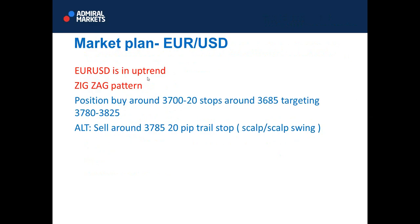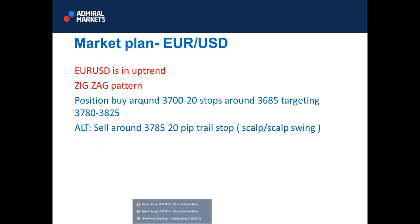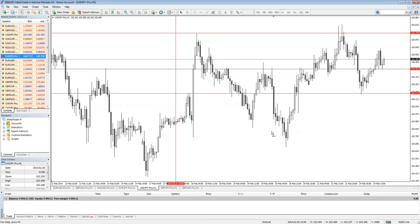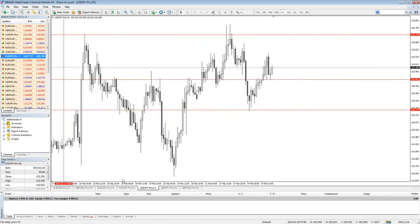Now, what about EURUSD? EURUSD is in an uptrend - it's very clear. It's the exact pattern. What I see for today: I can buy around 37 to 37.20, stops around 36.85, targeting 37.80 and 38.95. This is what I currently see on EURUSD. If the price hits 37.85, we can go for a scalp swing trade, because the price will usually react to this level.